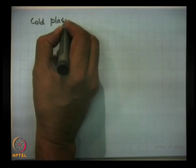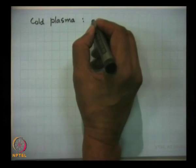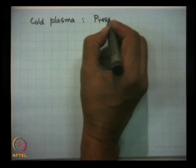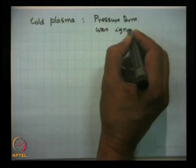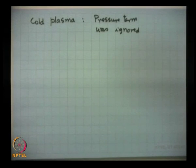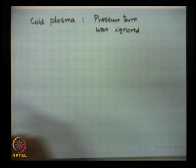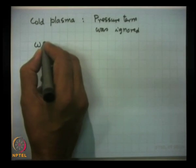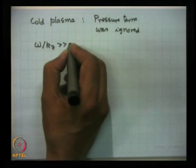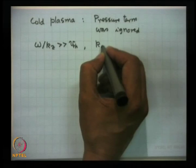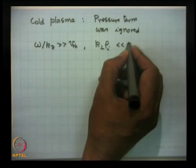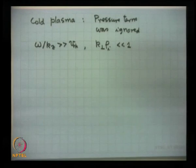In my last lecture, I was talking about electrostatic waves in a cold plasma. In a cold plasma, I ignored the pressure term in the equation of motion. This is all right as long as the phase velocity of waves is much bigger than the thermal velocity — when ω/k_z is much bigger than the electron thermal velocity, and the Larmor radius condition k_⊥ρ_i ≪ 1 is satisfied. Then this is a good approximation.